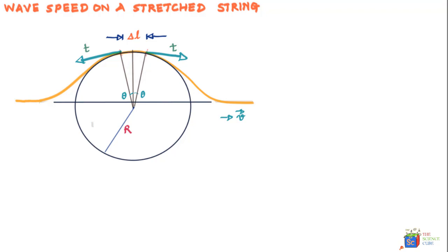The total force acting towards the center on this string of length Δl is F = 2T sin(θ), because T sin(θ) is the magnitude of vertical component on account of this T, and there's another T sin(θ) on account of this T. Both put together are in the downward direction towards the center.